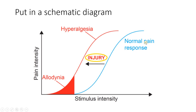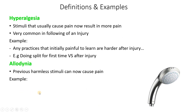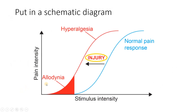Now let's put it into a schematic diagram. This is our normal pain response — the x-axis is stimulus intensity and the y-axis is pain intensity. Upon getting an injury, you have hyperalgesia: even at a lower stimulus intensity you are getting exposed to high pain. The pain intensity is high even when the stimulus intensity is still fairly moderate. In allodynia, the stimulus intensity is very low — like hot water — which doesn't put you in any pain normally.